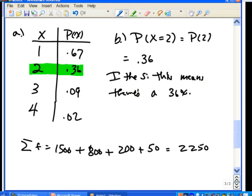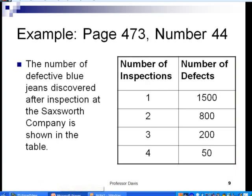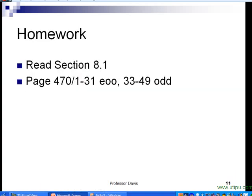So this means there is a 36% probability that there will be two defects in the genes. All right? So there's how we can take empirical data and use that to compute a probability distribution. So in this section, we want to do...